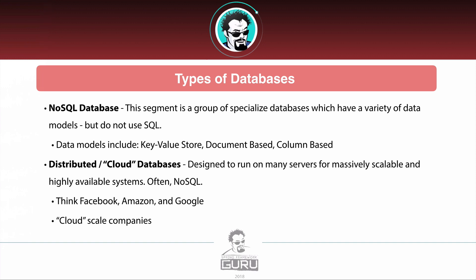There is also a whole segment called NoSQL. These databases do not use SQL and have a variety of data models including key-value stores, document-based, or column-based. We are focusing on relational databases in this course, so I won't dive deep into that, but I want you to be aware of it. Finally, there are distributed or cloud databases — designed to run on many servers and in some cases multiple data centers, so you could lose a data center and the system stays up. These are for massively scalable, highly available systems, and frequently they are NoSQL databases, though work has been done to get SQL databases running on them as well.